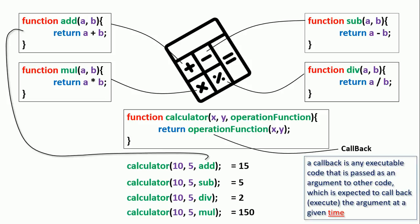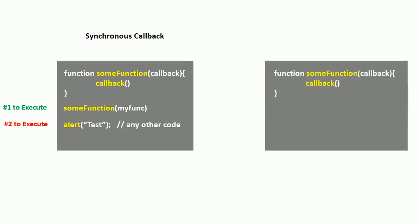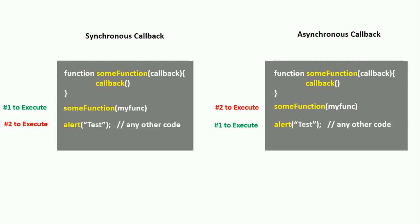Now the timing of the callback is really important. Say we have a function 'someFunction' that takes a callback as an argument. If someFunction callbacks 'myFunction' immediately, then myFunction will be the first to execute and any other code will be second — this is a synchronous callback. If someFunction callbacks 'myFunction' at a later time, for example after 10 seconds, then any other code executes first and myFunction is called later — this is an asynchronous callback.